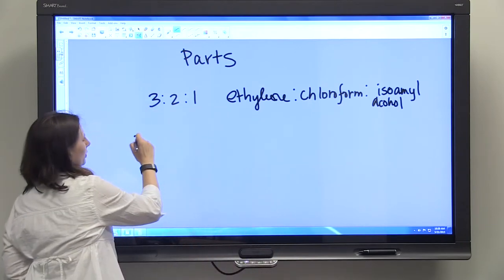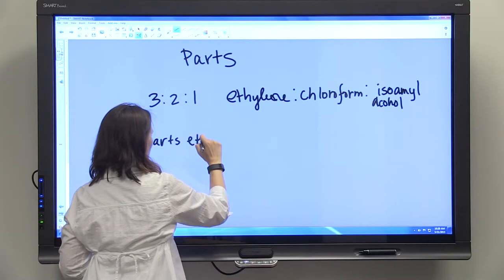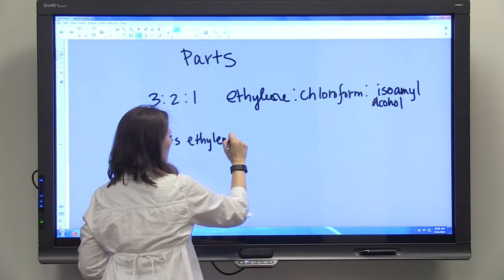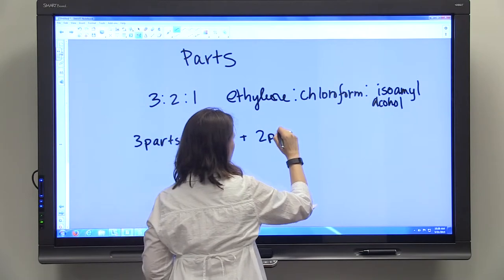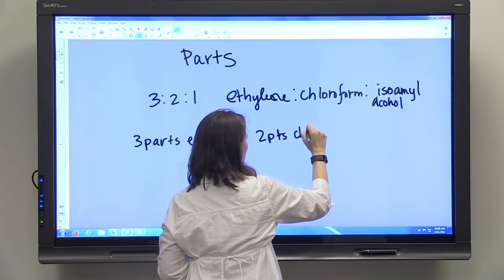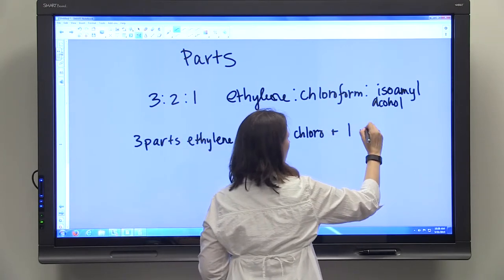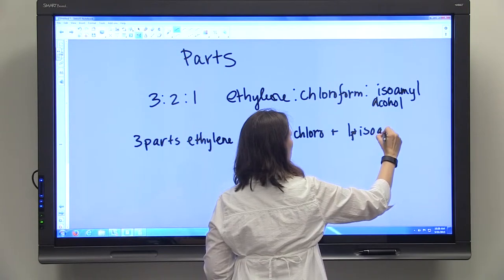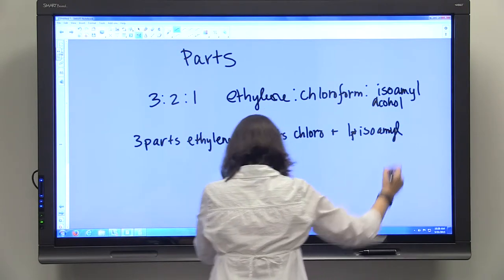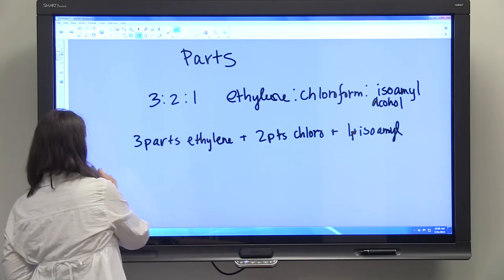us that we want 3 parts ethylene plus 2 parts chloroform and 1 part isoamyl alcohol. So you're going to have 6 parts total.